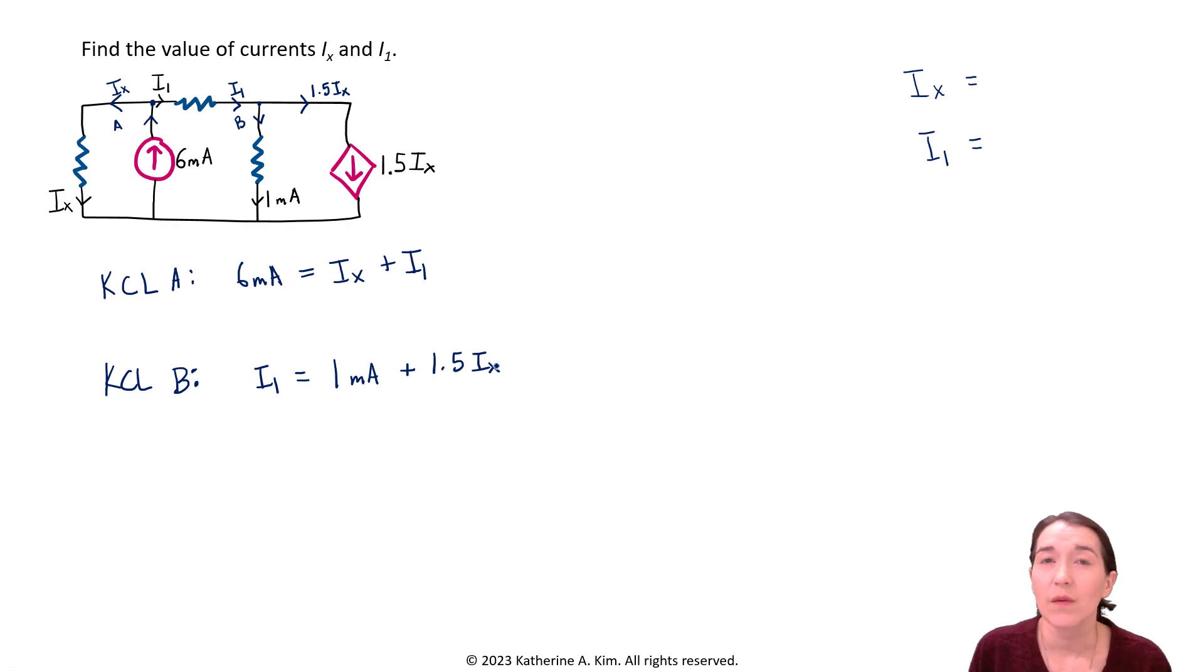All right, so what we've done by applying Kirchhoff's current law in two different nodes, so the intersection A, I guess we could also call this node A up here, and then B over here is we have two different equations, linearly independent equations. They're from different properties of the circuit. And they have two independent equations, and they both have I1 and IX. So we have two unknowns and two equations. So we should be able to solve for that. So now just treat this as a math problem.